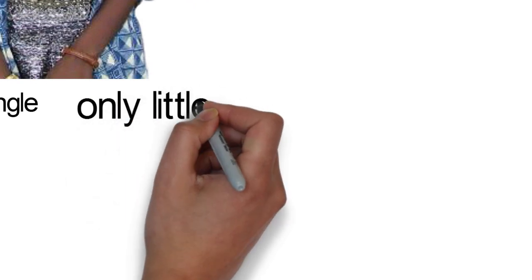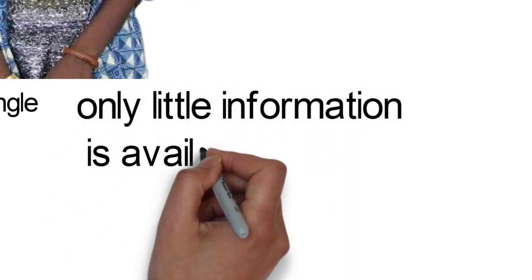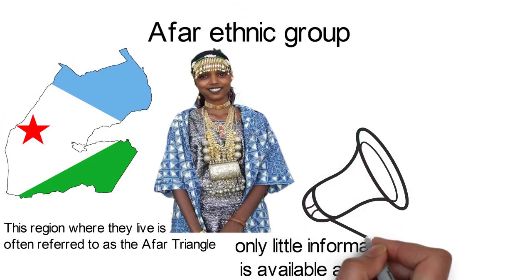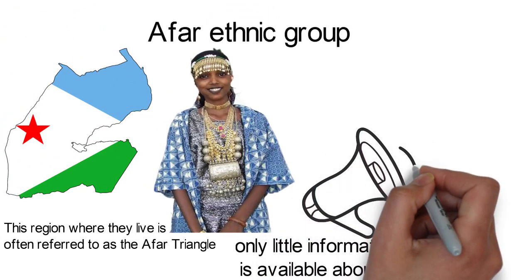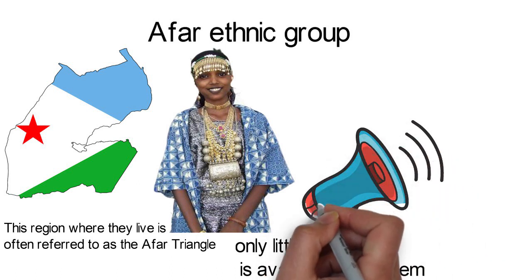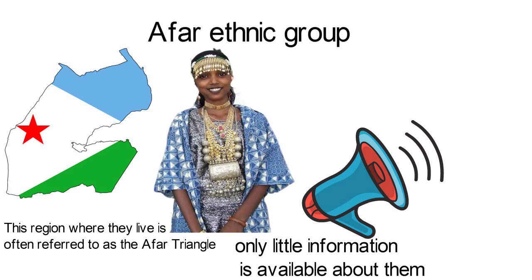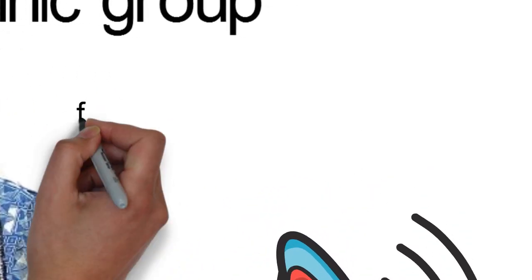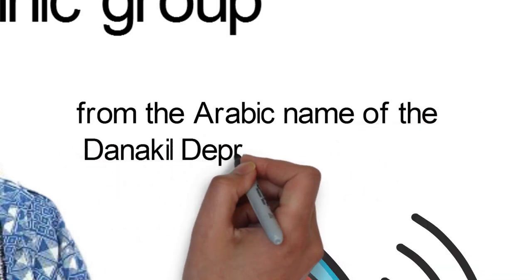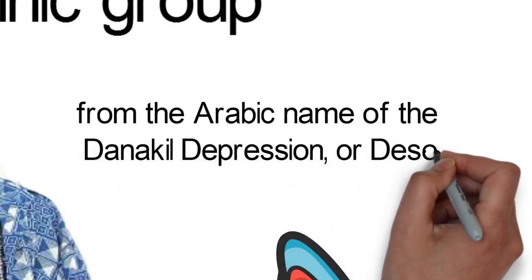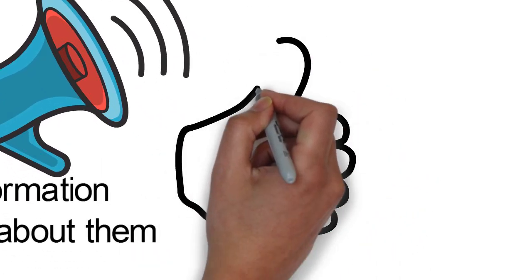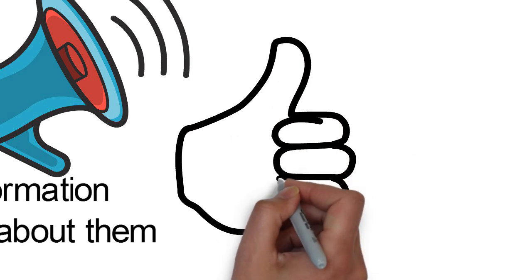The Afar are one of the people about whom only little information is available. Their inaccessibility makes it difficult to obtain reliable information. There are no written records of the Afar from previous eras and they remain largely an oral people. They are referred to by some older sources as the Danakil, from the Arabic name of the Danakil depression or desert. The Amaric name for them is Adal, which was the name of an ancient Muslim empire.